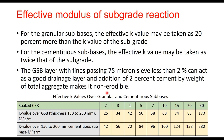Effective modulus of subgrade reaction is an important parameter in concrete pavement design. For granular subbase, the effective K value can be taken as 20% more than the K value of subgrade. For cementitious subbase, the effective K value may be taken as twice that of subgrade. If the GSB layer contains fines less than 2%, it can act as a good drainage layer, and adding 2% cement by weight of total aggregate will make it non-erodible.